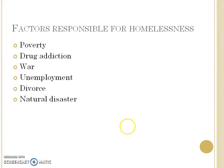Now the factors responsible for homelessness: the first is poverty — obviously a poor person will not have a permanent residence. Another reason is drug addiction, because due to drug addiction many people sell off their assets and property, even their house, and finally become homeless.